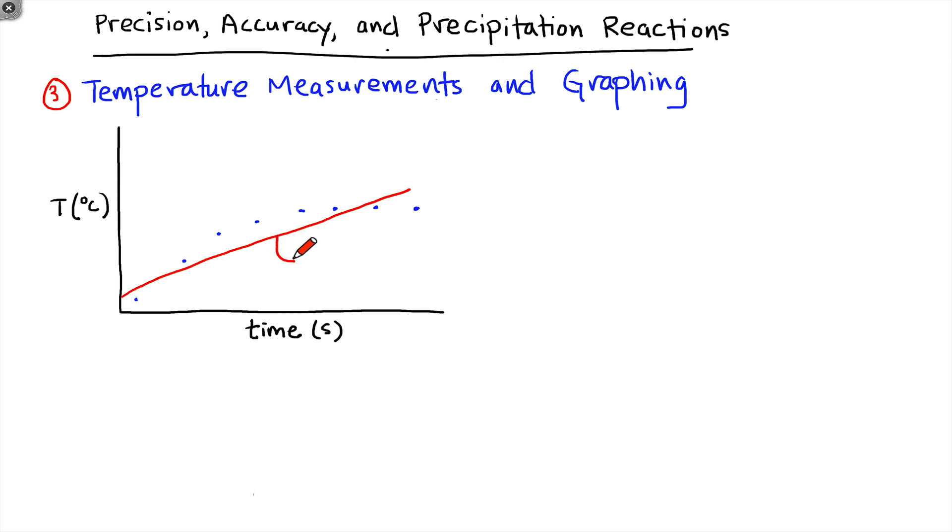And an equation is going to pop out of this line, y equals mx plus b, where the x variable is, of course, the variable that was plotted on the x-axis, time, and the y variable is the one plotted on the y-axis, temperature.